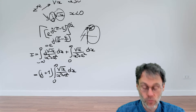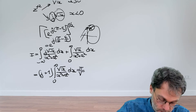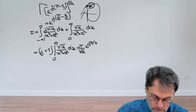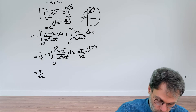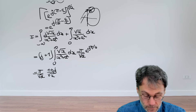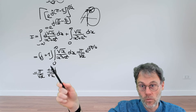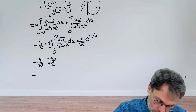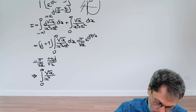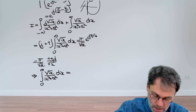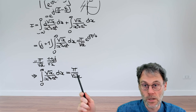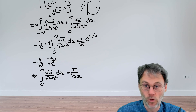Recalling our residue calculus result: the contour integral equals π/sqrt(a) times e^(jπ/4), and e^(jπ/4) = (1+j)/sqrt(2). So we have (1+j) times our integral equals π/sqrt(a) times (1+j)/sqrt(2). The factors of (1+j) cancel on both sides, giving us the final result: the integral from 0 to ∞ of sqrt(x)/(x²+a²) dx equals π/sqrt(2a). Thanks to residue calculus, we can solve this relatively painlessly.